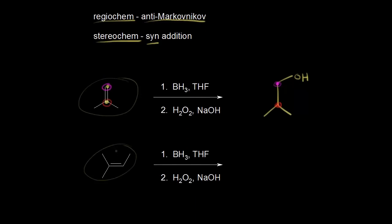For this alkene right here, I look at my two carbons across the double bond — this carbon and this carbon. Since this is a hydroboration oxidation, I'm going to add the OH to the less substituted carbon, which is of course the one on the right. So just thinking about regiochemistry, I draw in the OH on that carbon. When we look at the product, the carbon where the OH was added — the one in magenta — is a chiral center, so we do need to worry about stereochemistry.